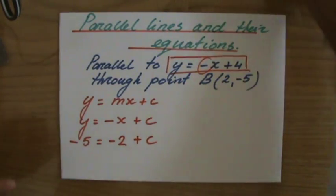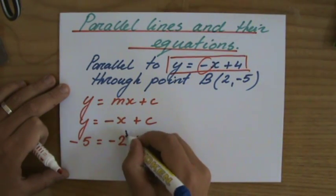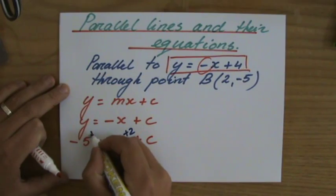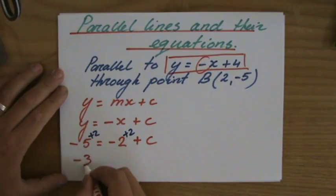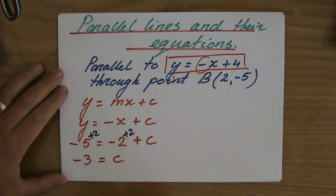There we go. And then we rearrange that to find c. To get rid of the minus 2, I do it on both sides. So that's minus 5 plus 2, that's minus 3. So my y-intercept is minus 3.